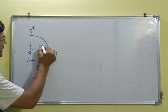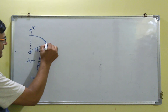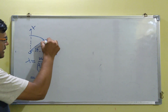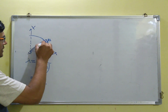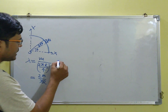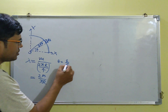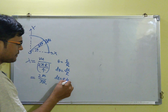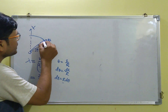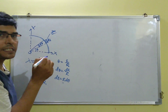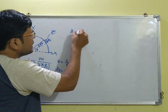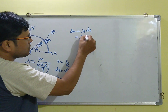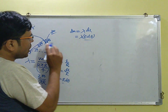Since the mass is distributed angularly, we take a differential element at angle θ. Let the length of this element be dl, subtending an angle dθ. From θ = l/r, we get dl = r·dθ. The mass of this differential element is dm = λ·dl = λ·r·dθ.